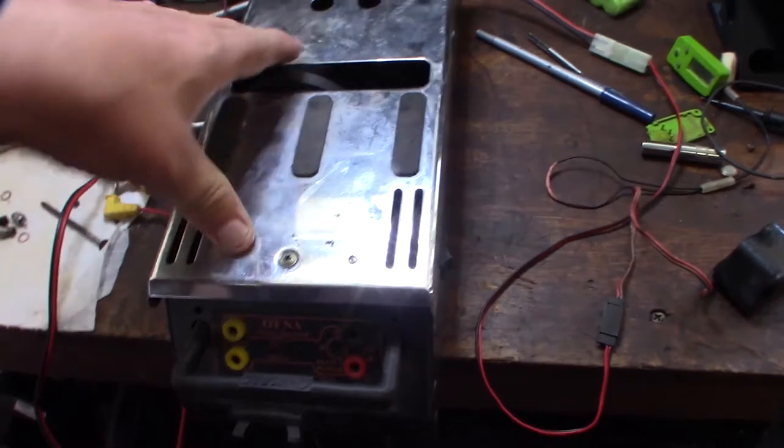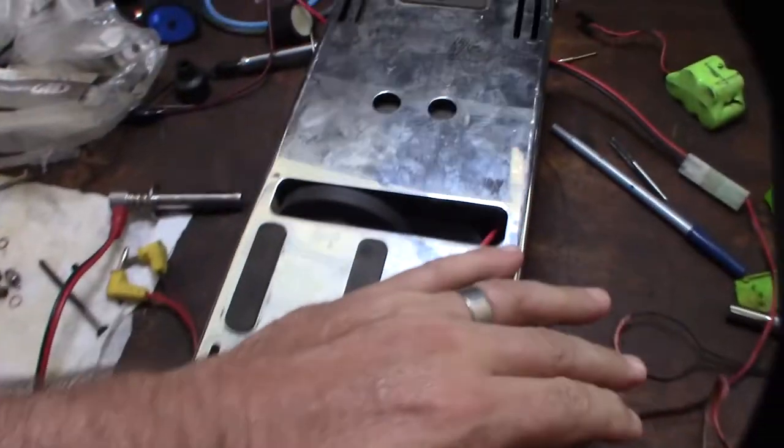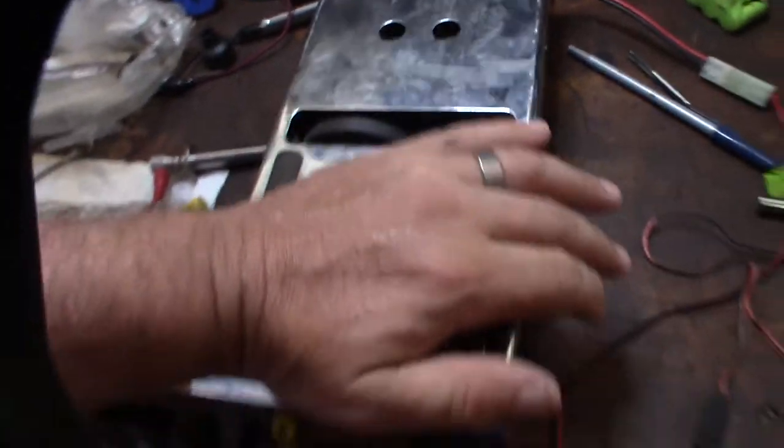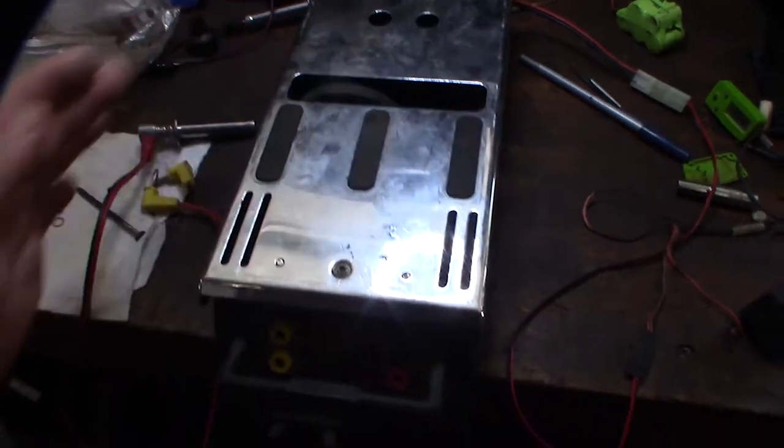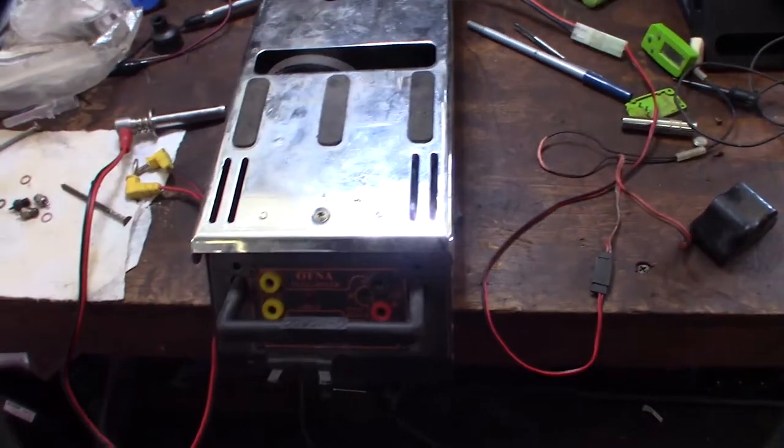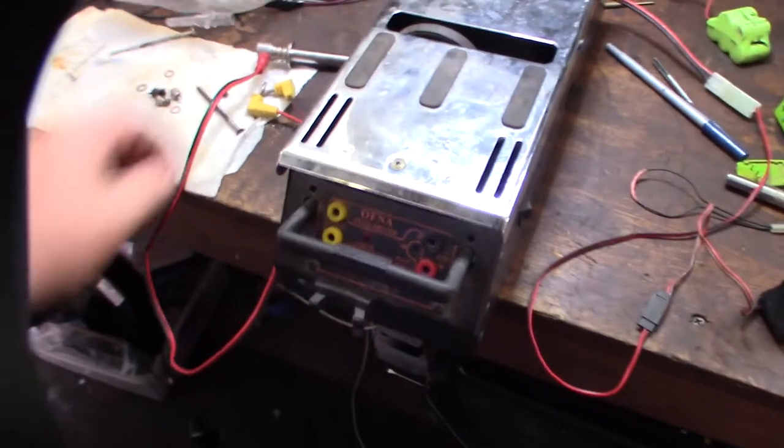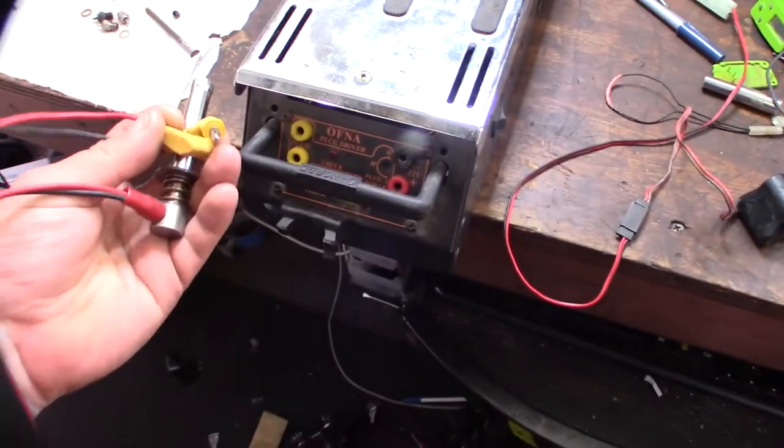And if you're not familiar with the jump starter, it's a way to start your car or buggy. That thing is supposed to engage the flywheel, and I'll show you that in a second. But one of the things I thought was cool about this Ofna one is that it came with this glow plug igniter.